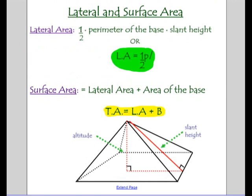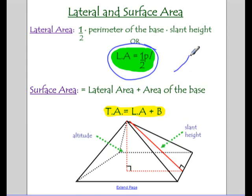Now let's look at the formulas. The lateral area is one-half the perimeter of the base times the slant height — note we use a script L to represent slant height. To find the total surface area, we take that lateral area and add the area of the base, which for a square is straightforward. If the base were a regular hexagon, you might need 30-60-90 triangles or other methods to find that area.